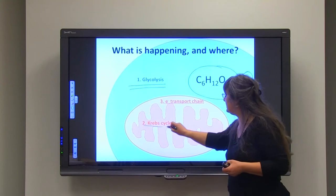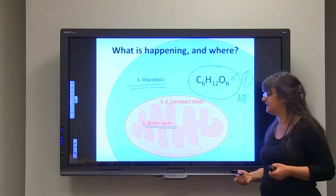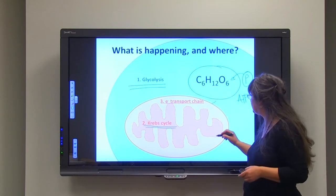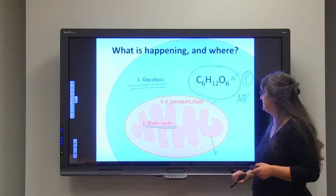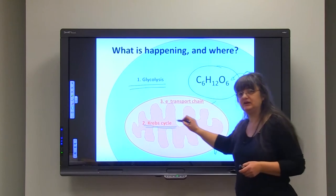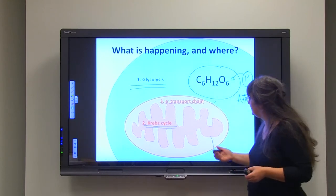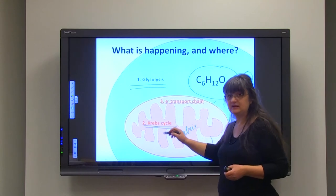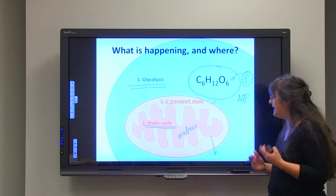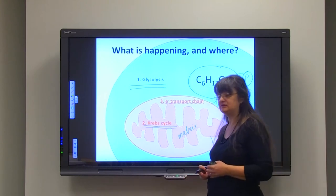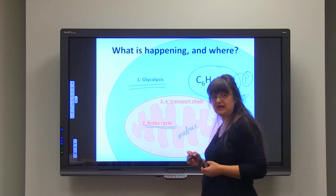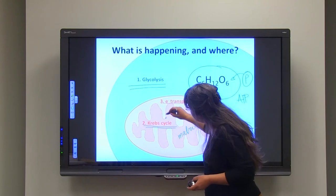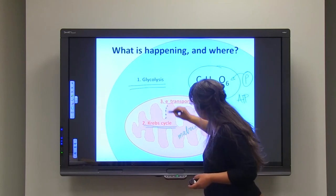Now, after that, the next step is Krebs cycle or citric acid cycle that is happening in mitochondrial matrix. So, this is the outside portion, outside membrane of the mitochondria. This is the inner membrane of the mitochondria, very important to remember. And inside of the inner membrane of the mitochondria, that part of the organelle is called matrix. And that is where Krebs cycle or citric acid cycle is happening. After that, the third, the final portion of the cell respiration is electron transport chain or oxidative phosphorylation, which is happening embedded in the inner membrane of the mitochondria.